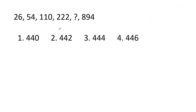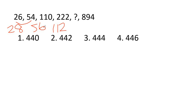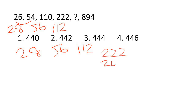Next question: 26, 54, 110, 222. The differences are: 26 to 54 is 28, 54 to 110 is 56, 110 to 222 is 112. The differences are doubling: 28, 56, 112. So we add 112 more, then add 112 again to get 222, and add 112 to get the next value. The answer is option 3.